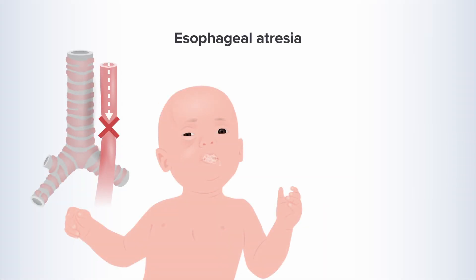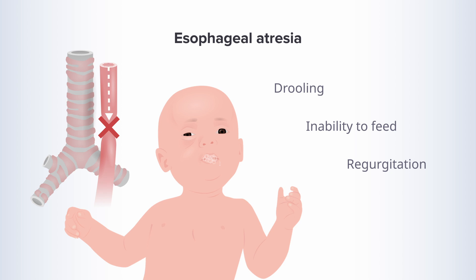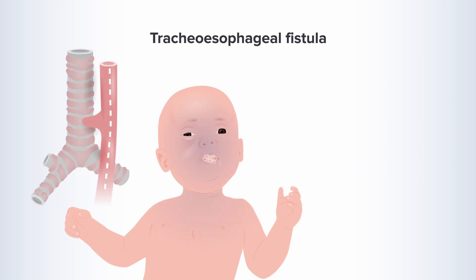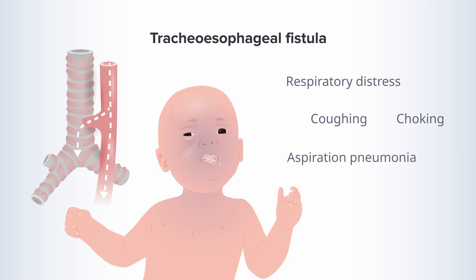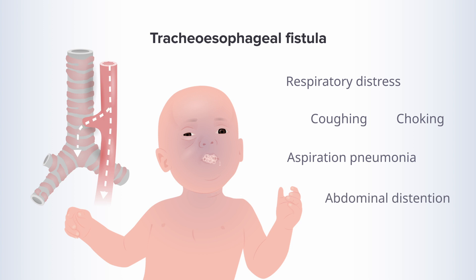In the infant who has one of these anomalies, the symptoms usually manifest pretty early, usually within the first 24 hours. With esophageal atresia, where there is a gap, the baby will have drooling, inability to feed, and regurgitation. In tracheoesophageal fistula, however, every time the baby ingests something — and even just salivates — that is going to be going into the lungs. The baby is going to have respiratory distress, coughing, and choking, and will likely develop an aspiration pneumonia. And because there is a distal connection from the trachea into the lower GI tract, every time the baby inhales, air will go into the stomach, causing abdominal distension — basically hyper-inflating the GI tract.